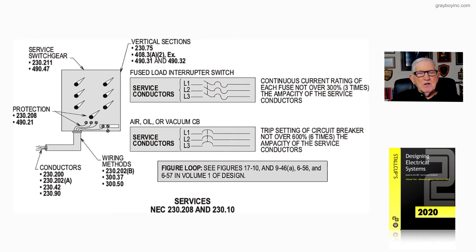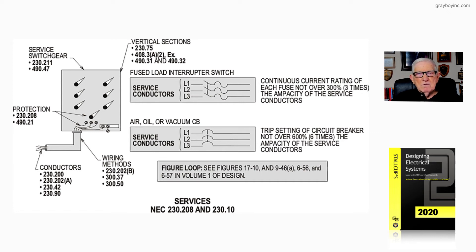For your conductors, we go to 230.200, 230.202A, 230.42, and 230.90 for ampacity. Go to the new Article 311 and select a table based on conductors in conduit or cables — whether in conduit in the ground, above ground, and so forth. To select your circuit breakers, fuses, switchgear, switchboard, or panelboard, you have to go to Article 490, which we have referenced for you there.